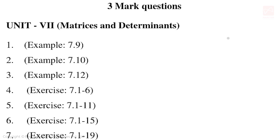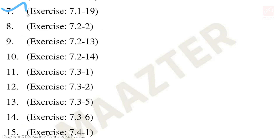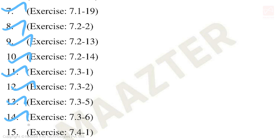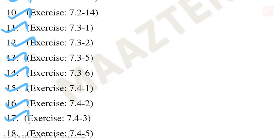Important 3-mark questions. Unit 7: Examples 7.9, 7.10, 7.12. Exercise 7.1 sum number 6, 11, 15, 19. Exercise 7.2 second sum, sum number 13, 14. Exercise 7.3 first, second, fifth, sixth. Exercise 7.4 sum number 1, 2, 3, and 5.